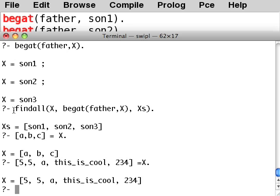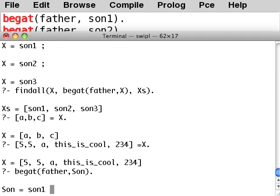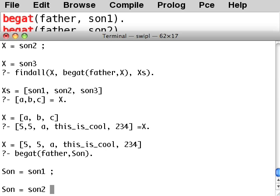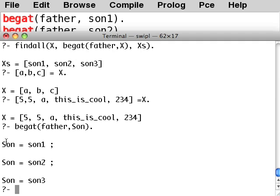And what's more, to reiterate this find-all thing, here's how it works. If you have a query, like begat father, son, something like this, which you know temporally at different times gives you the answers that you want, right, you can turn that temporal sequence into a list by using find-all. So here's how you do it, find-all.